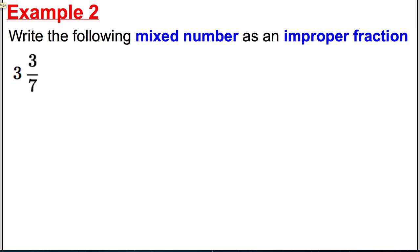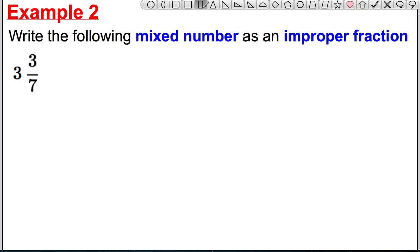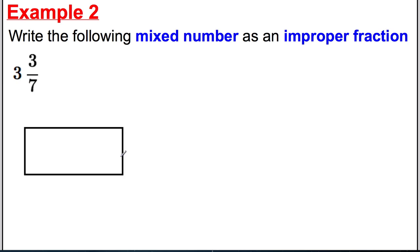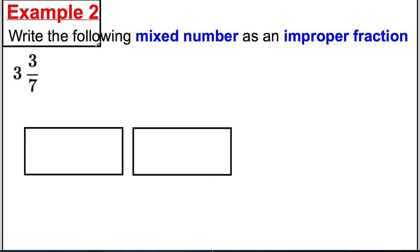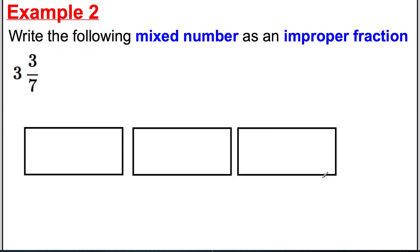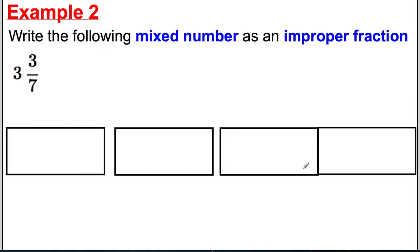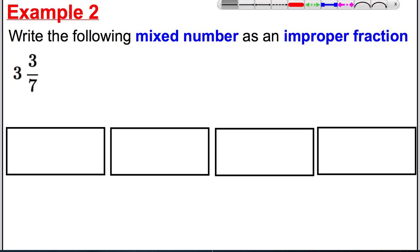Example two: write the following mixed number as an improper fraction — three and three sevenths. Three and three sevenths is between three and four, so we're going to need four boxes. We divide each box into sevenths because of that denominator.